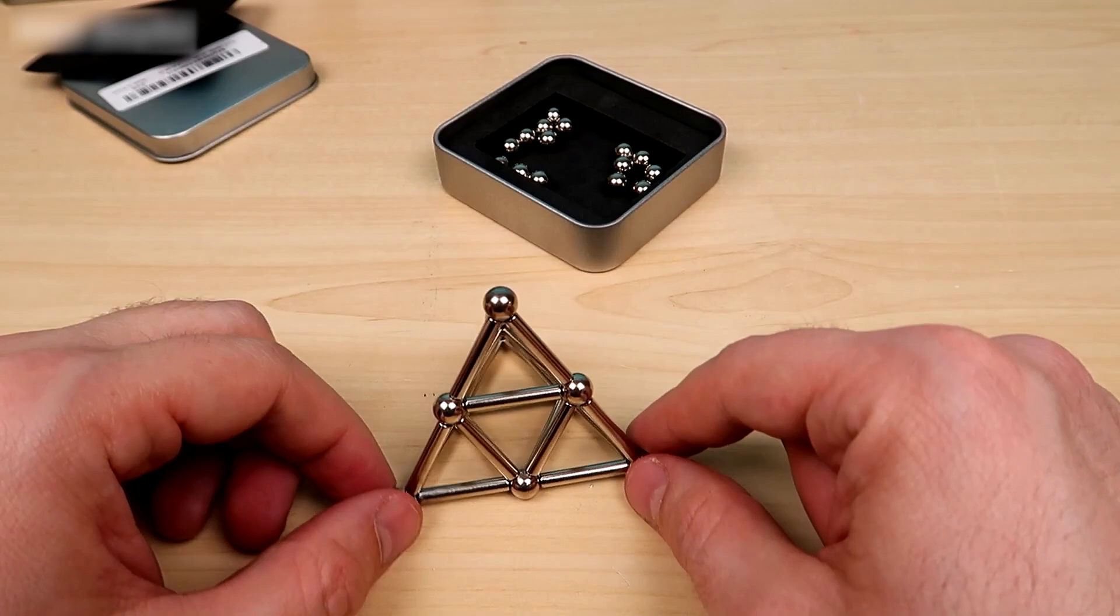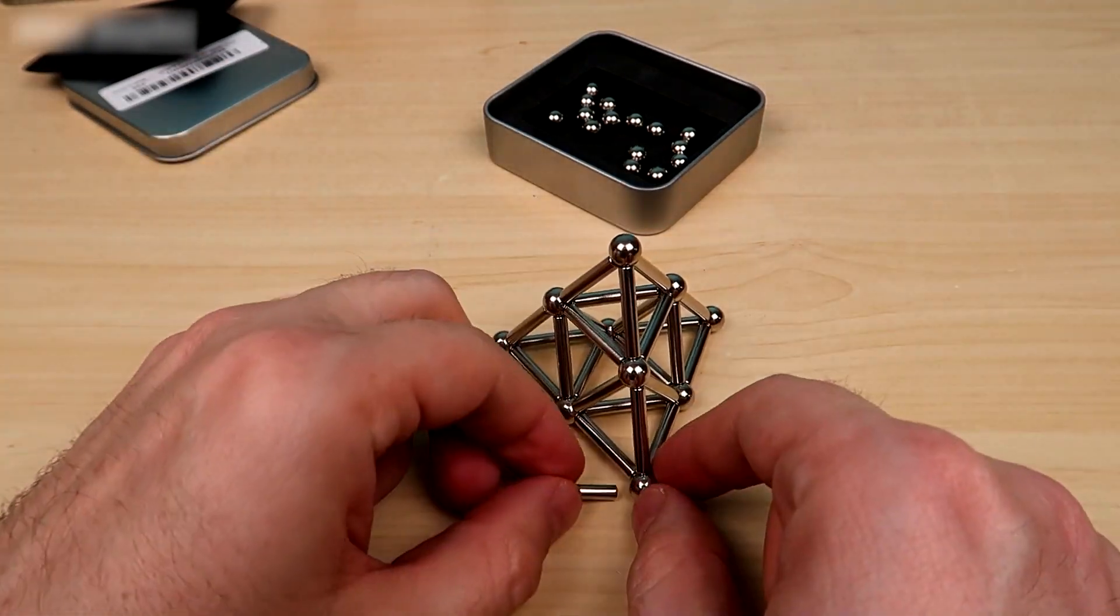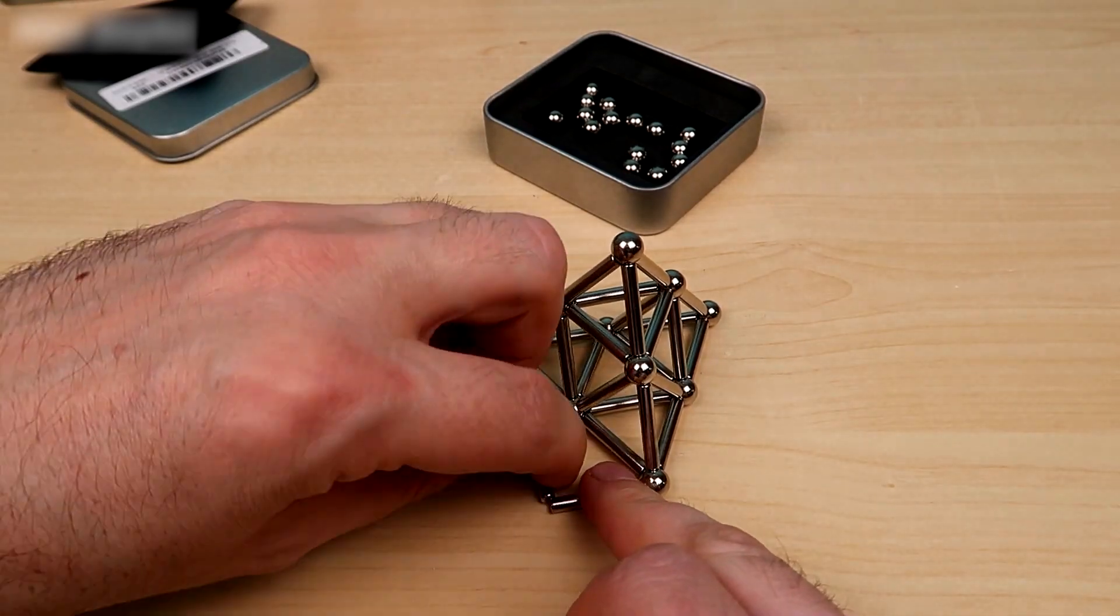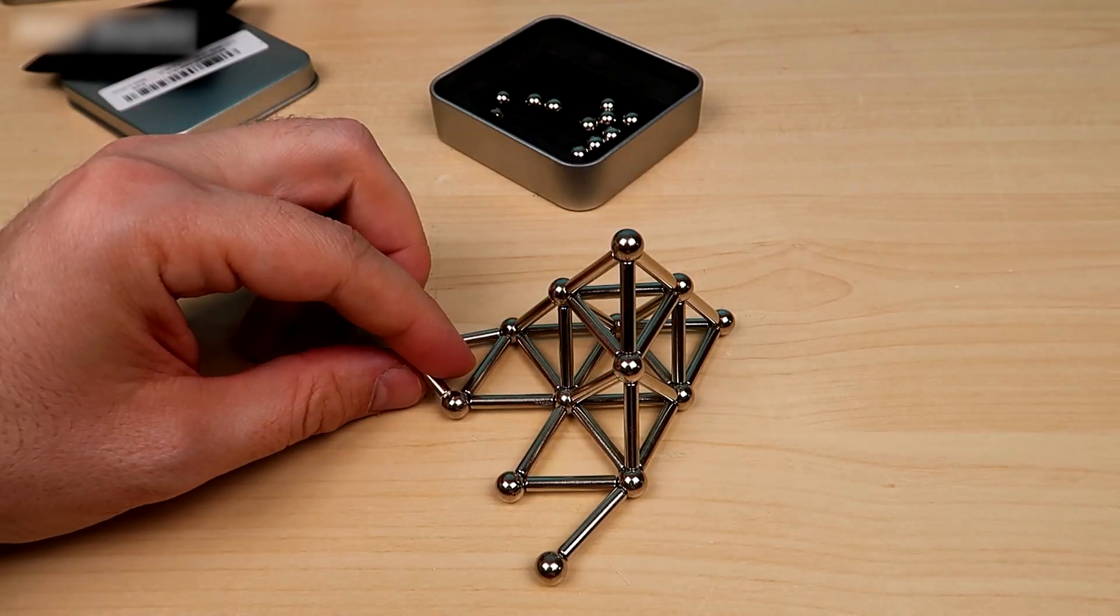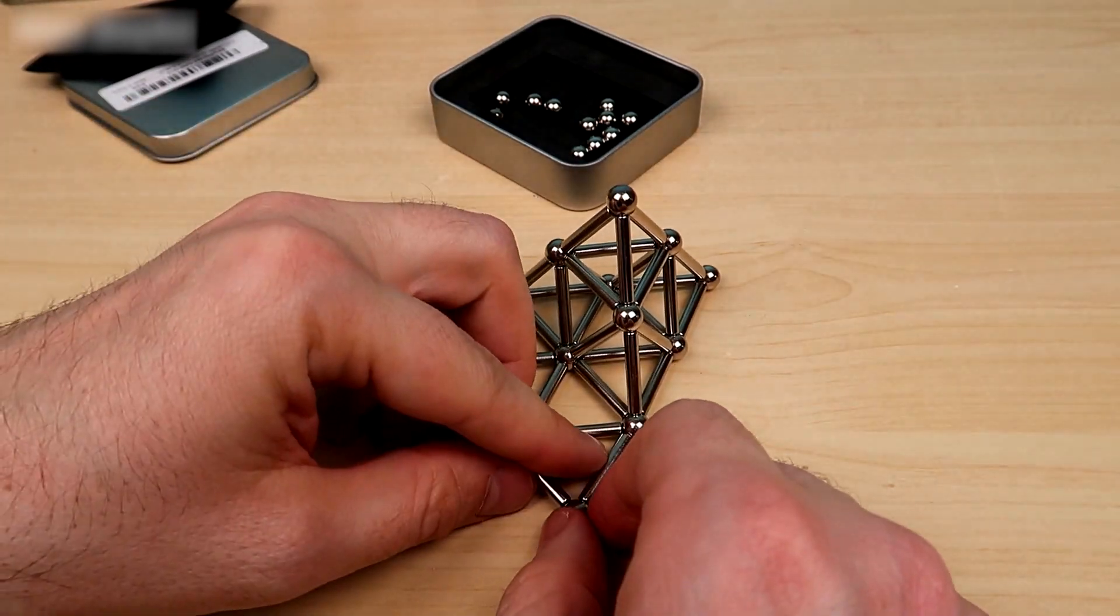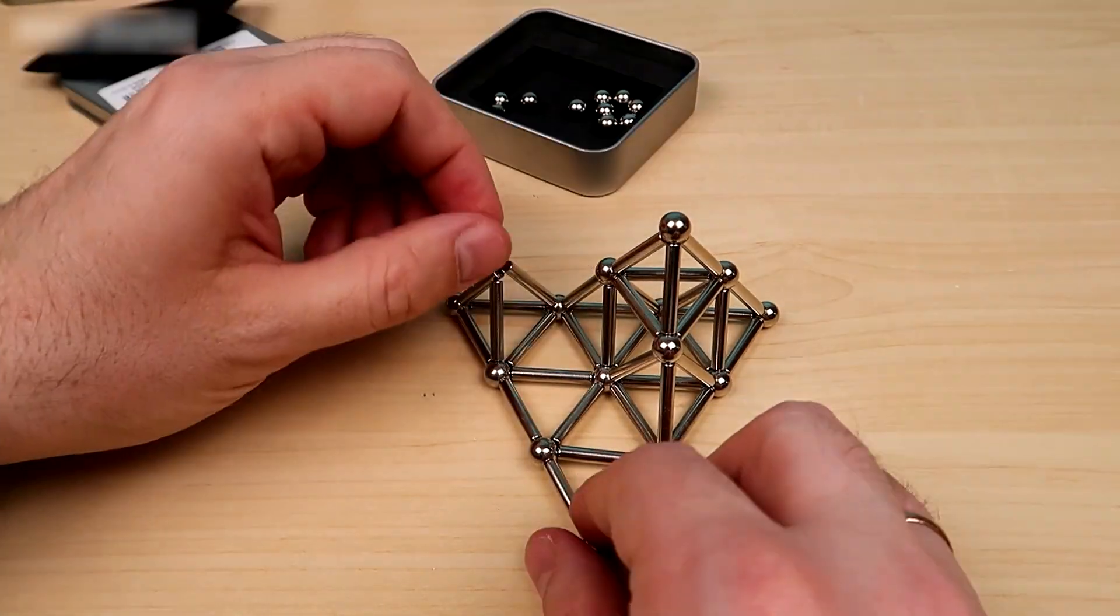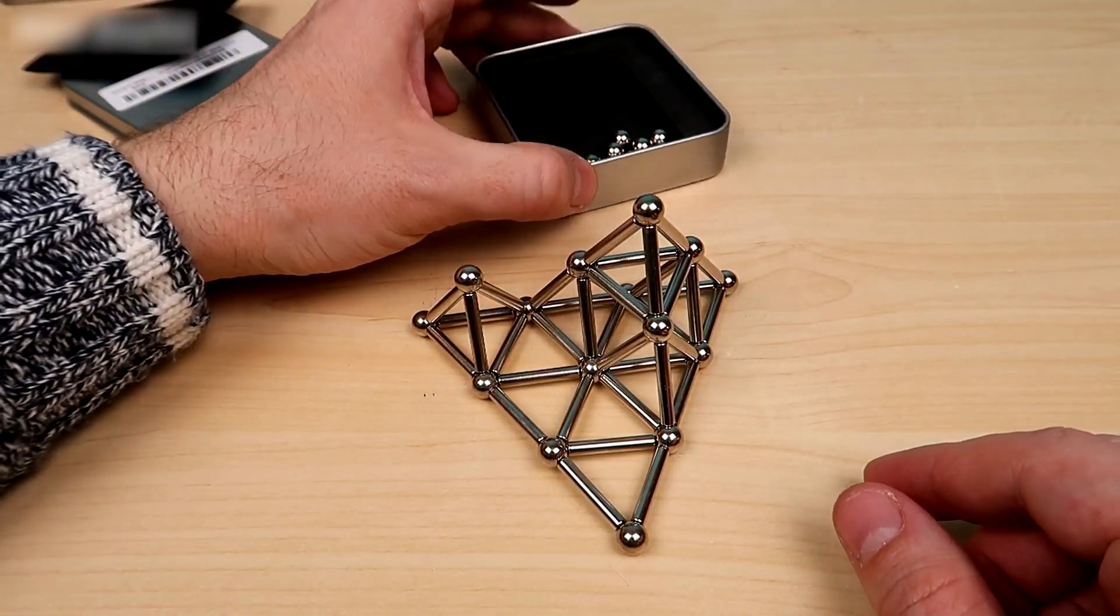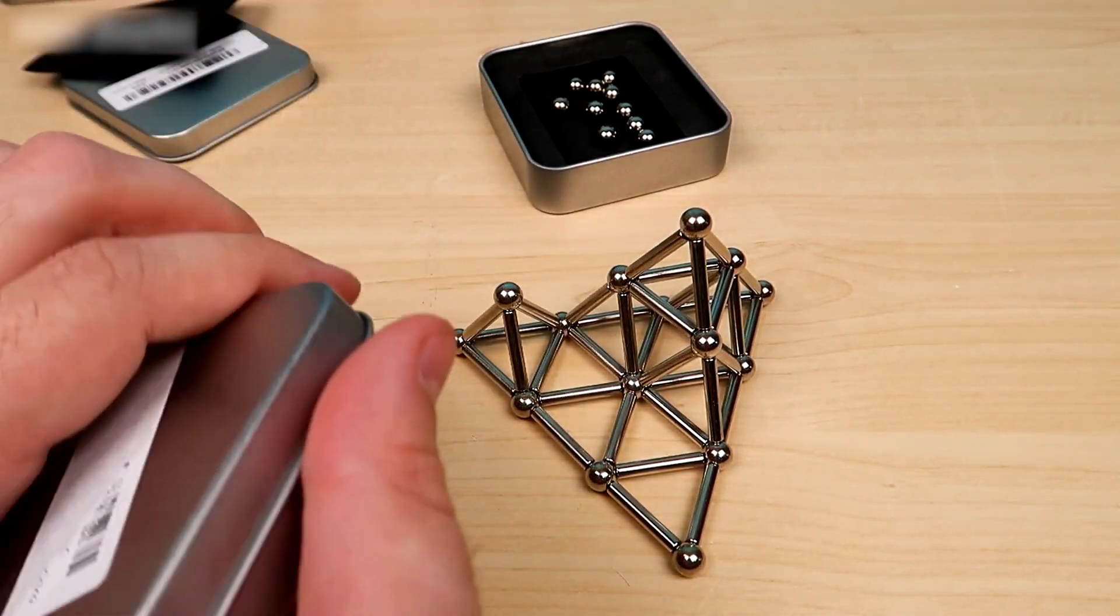Now we have a pyramid with two faces. Let's keep going. The first kit is finished and we didn't manage to complete this pyramid with three faces. We need to open the next kit. Let's keep going.